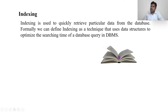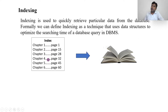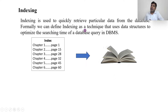For example, suppose you want to search something in a book — say a particular chapter. If you don't have an index, you go on turning pages. But if you have an index, you directly jump to, say, page 28 for chapter three, and start accessing from there. So what does an index do? It saves your time. Formally, we can define an index as a technique that uses a data structure to optimize the search time of a database query in DBMS. In simple words, it saves our time for searching.